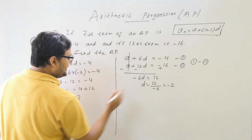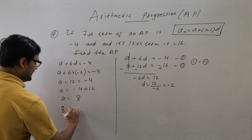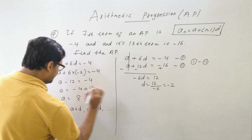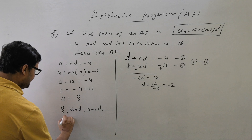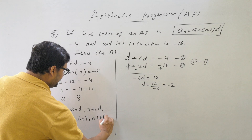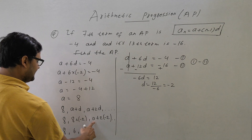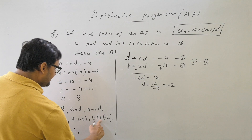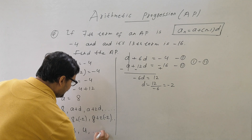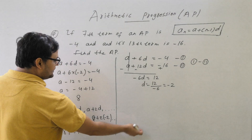Substituting D = -2 into equation 1: A + 6(-2) = -4, so A - 12 = -4, giving A = 8. So the AP is: 8, 8+(-2), 8+2(-2), ... which gives 8, 6, 4, 2, 0, -2, -4, and so on.